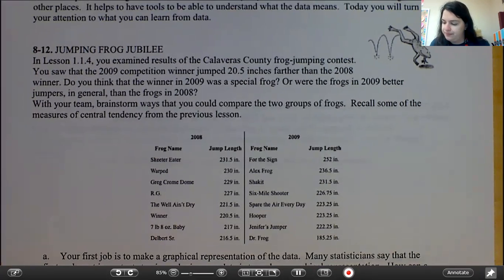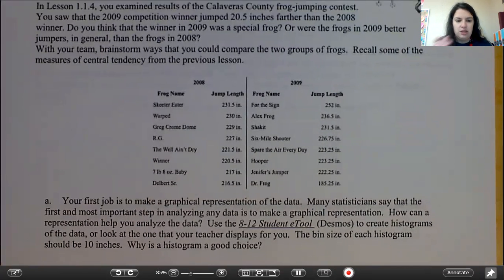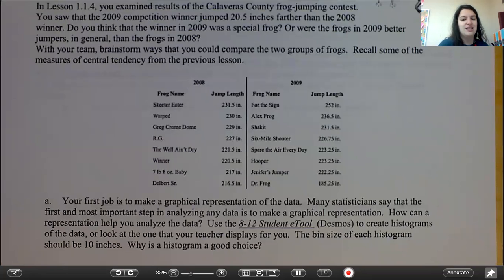Part A says your first job is to make a graphical representation of the data. Many statisticians say that the first and most important step in analyzing any data is to make a graphical representation. How can a representation help you analyze the data? So, you are going to create a histogram.